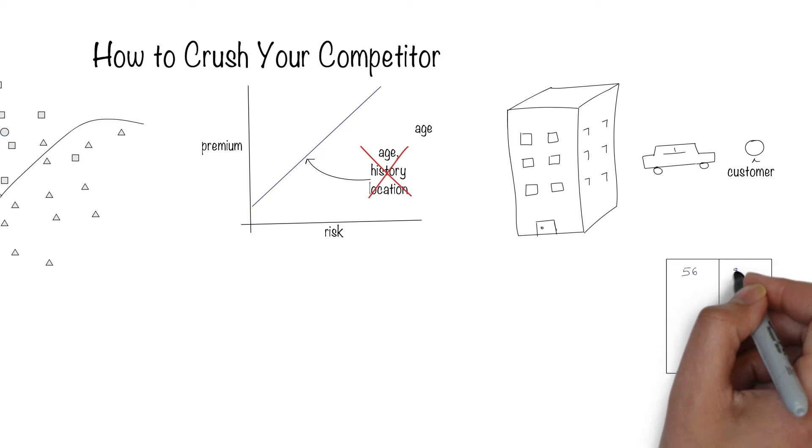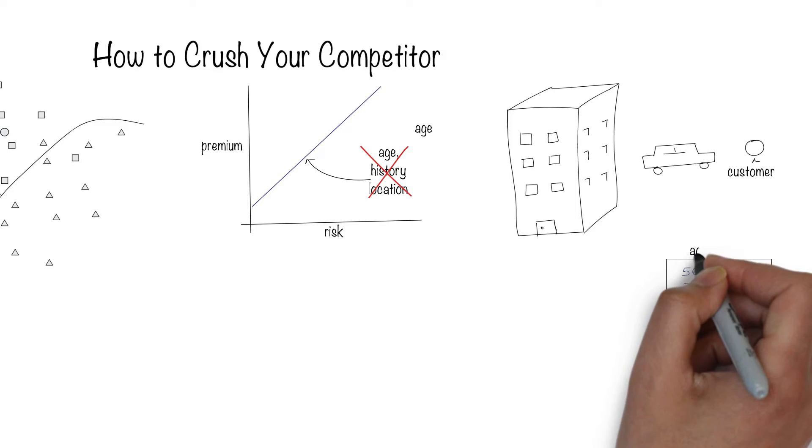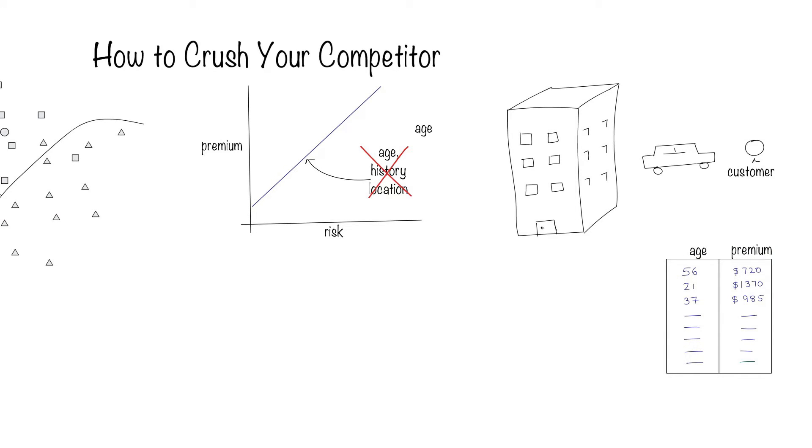If we had competitor data on their customers, specifically the customer's age and the premium each pays, then we can determine the competitor's underlying risk model. You break the data into a training set and a testing set.